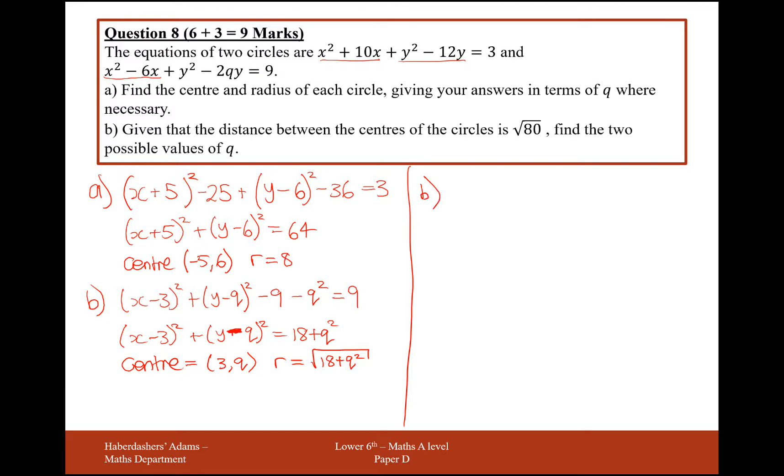Part b: the distance between the center of the two circles is the square root of 80. Find the possible values of q. Well what we want to do is we want to find the distance between minus 5, 6, and 3, q.